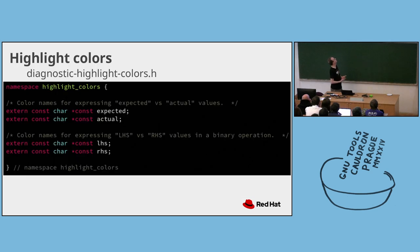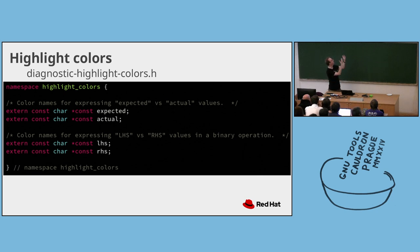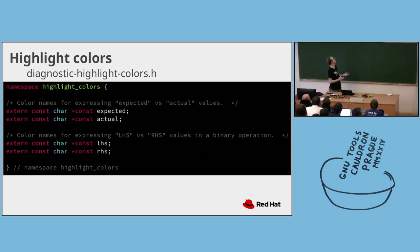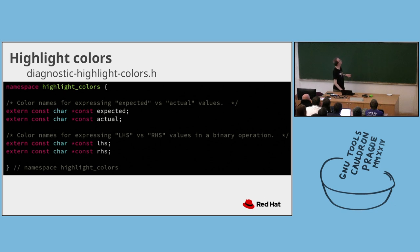From an implementation standpoint, there's a new header in the GCC subdirectory called diagnostic-highlight-colors.h. It provides symbolic names so inside the implementation you can refer to 'highlight_colors::expected' versus 'highlight_colors::actual', or 'left_hand_side' and 'right_hand_side'. This makes the intent very clear in the code.